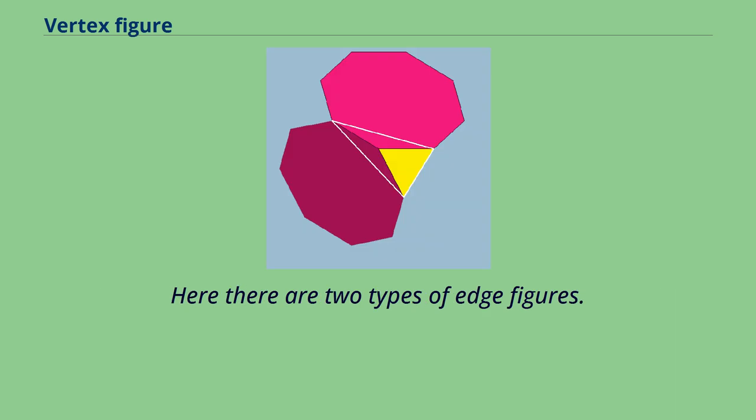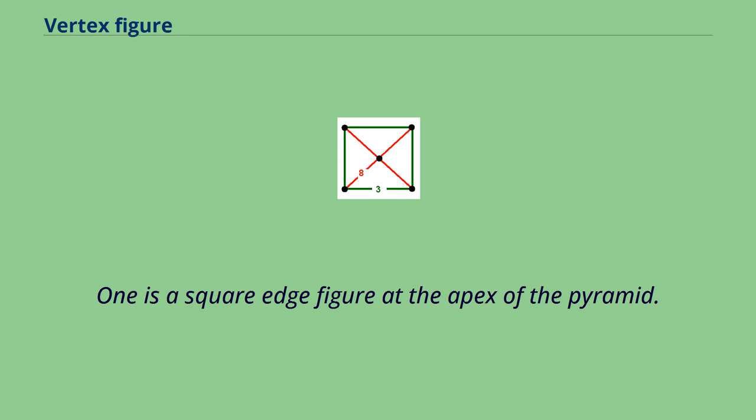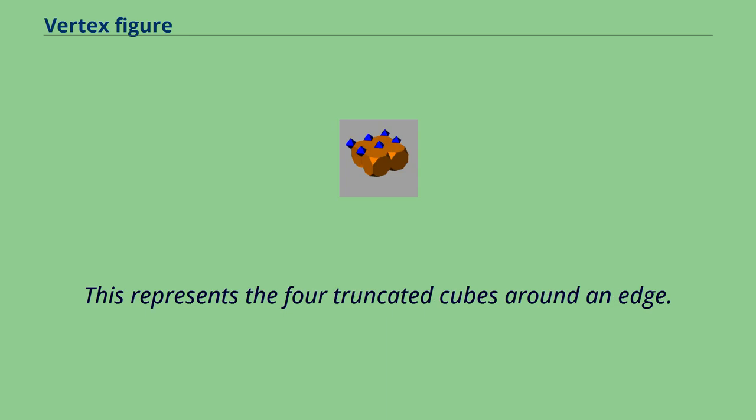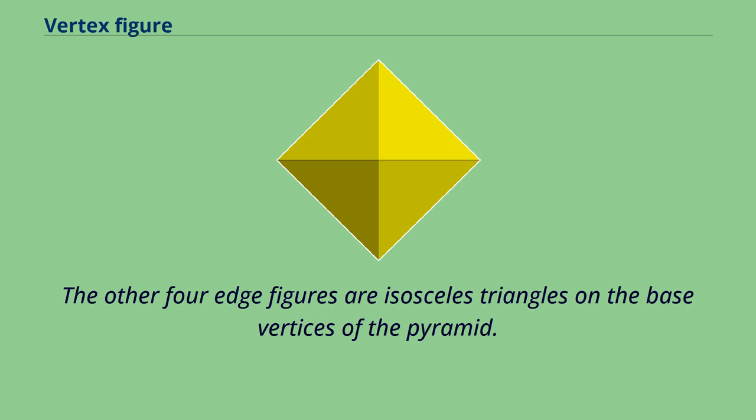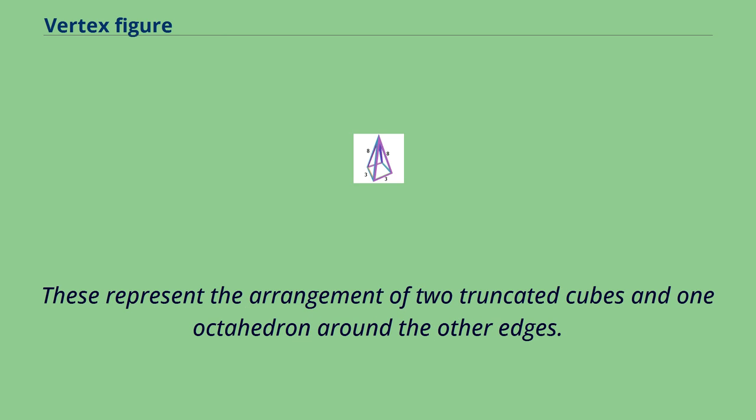This represents the four truncated cubes around an edge. The other four edge figures are isosceles triangles on the base vertices of the pyramid. These represent the arrangement of two truncated cubes and one octahedron around the other edges.